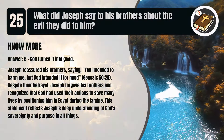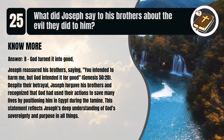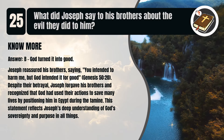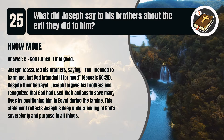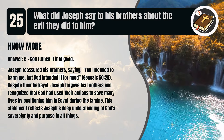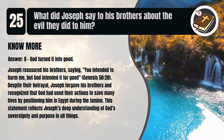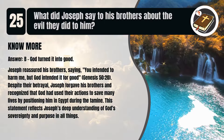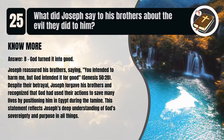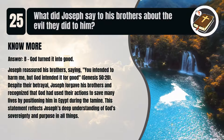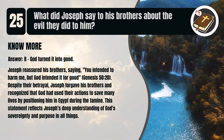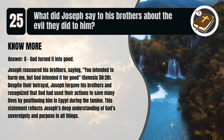That's B. God turned it into good. Joseph reassured his brothers, saying, 'You intended to harm me, but God intended it for good.' Genesis chapter 50 verse 20. Despite their betrayal, Joseph forgave his brothers and recognized that God had used their actions to save many lives by positioning him in Egypt during the famine. This statement reflects Joseph's deep understanding of God's sovereignty and purpose in all things.